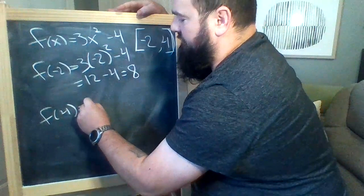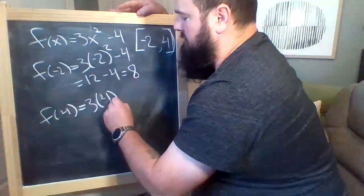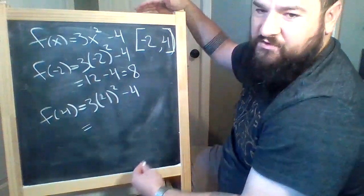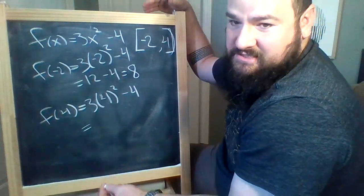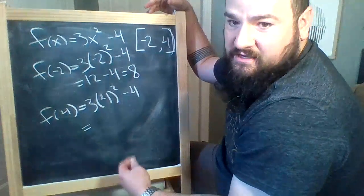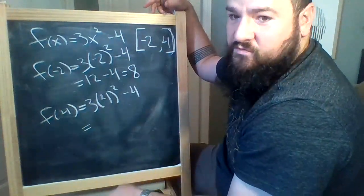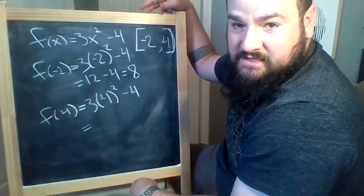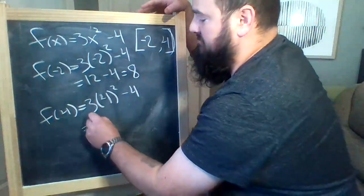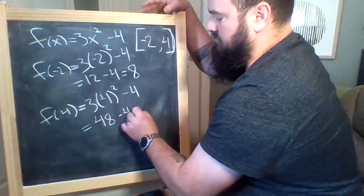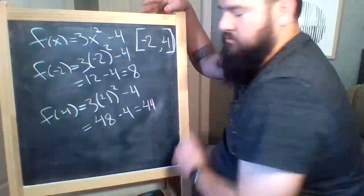Now f(4), we get 3 times 4² minus 4. So 4², 4 times 4 is 16. 3 times 16 is, well, let's see, 3 times 10 is 30, 3 times 6 is 18. So we get 48 minus 4 or 44.